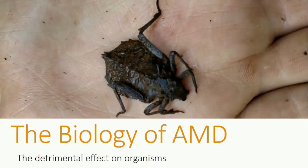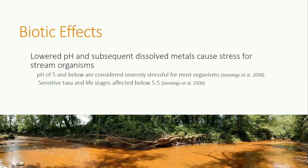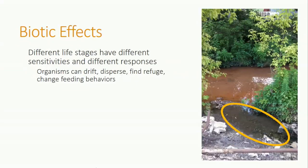Let's talk a little bit about how organisms react to acid mine drainage. The lowered, meaning acidic, pH and the dissolved metals from acid mine drainage are stressful to organisms. Each organism has its own tolerance level, but a pH of 5 or below is severely stressful for most organisms. Particularly sensitive species or life stages can begin to be negatively affected at a pH of 5.5. Different life stages have different sensitivities and different responses to AMD. More mobile organisms, like fish and macroinvertebrates, can drift out of stressful areas. More stationary organisms, like some macroinvertebrates, can change their feeding behaviors or find many refuges as seen in this picture. Completely stationary organisms, like algae, must have adaptations against AMD or perish.